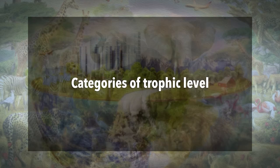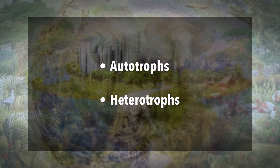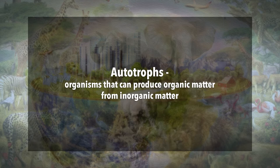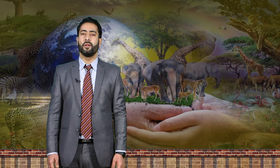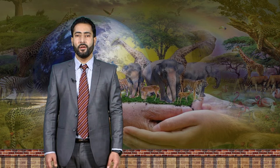Now let us discuss different categories of trophic level. The trophic levels have two major categories: the autotrophs and the heterotrophs. The autotrophs are organisms that can produce organic matter from inorganic matter. Since they can make their own food and do not need to feed on other organisms, they are also referred to as the producers of an ecosystem.